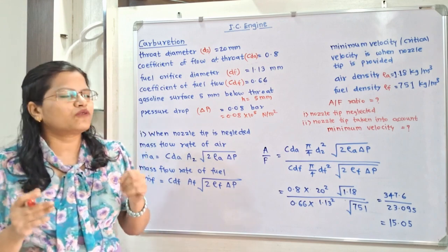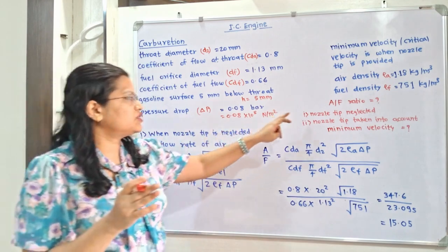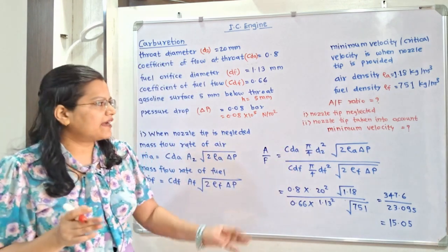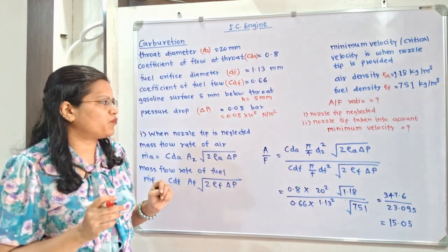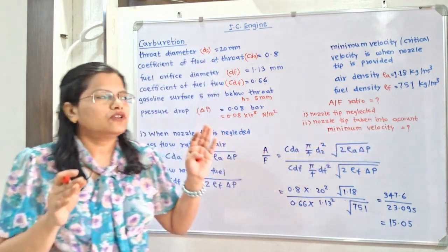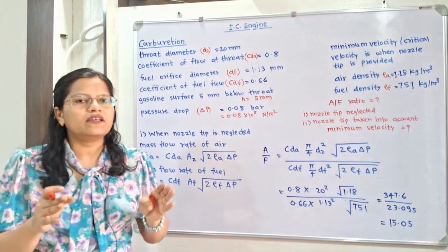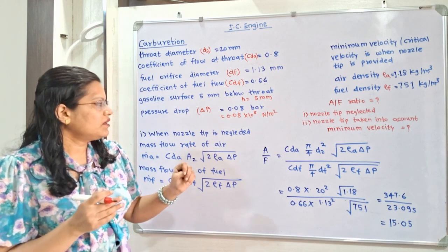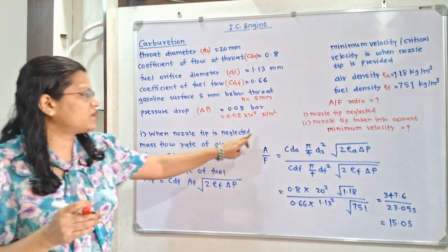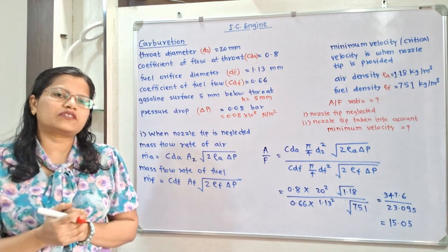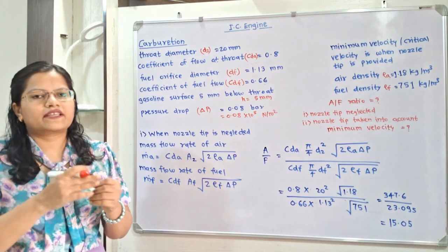We need to calculate the air-to-fuel (A/F) ratio under two conditions: first when the nozzle tip is neglected, and second when the nozzle tip is taken into account. We also calculate the minimum velocity when the nozzle tip is provided. For the A/F ratio, we calculate mass flow rate of air and mass flow rate of fuel, then take their ratio.